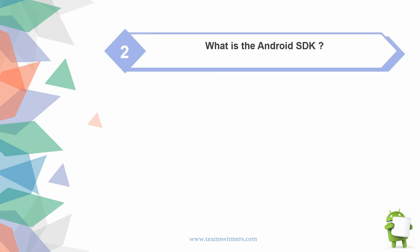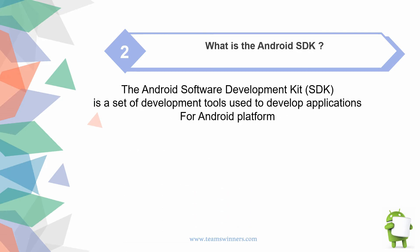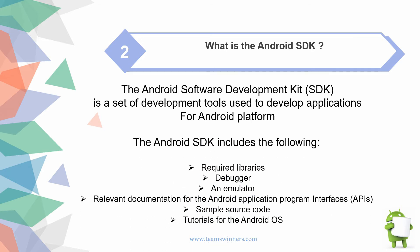What is the Android SDK? The Android Software Development Kit (SDK) is a set of development tools used to develop applications for the Android platform. The Android SDK includes the following: required libraries, a debugger and emulator, relevant documentation for the Android API, sample source code, and tutorials for the Android OS.